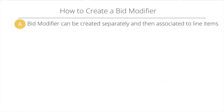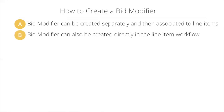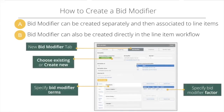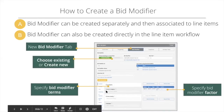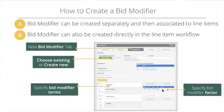There are two ways to create a bid modifier. First, you can create it separately as its own object and associate it to multiple line items. Second, you can create it directly within the line item workflow. Within the line item workflow there's a new bid modifier tab where you can choose an existing bid modifier or create a new one, and specify your bid modifier terms in a module that looks similar to the targeting module, with the factor specified on the right-hand side.